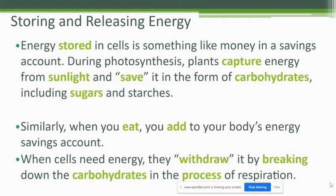The energy is stored in the cells. A good analogy is a bank account or savings account. During photosynthesis, plants capture energy from sunlight and save it in the form of carbohydrates — those sugars and starches, which is glucose. Just like when we eat, we are adding nutrients and energy to our body, but it gets stored for when we need to use it later. When cells need the energy, they withdraw it by breaking down the carbohydrates in the process of respiration, which releases that energy so it can be used.